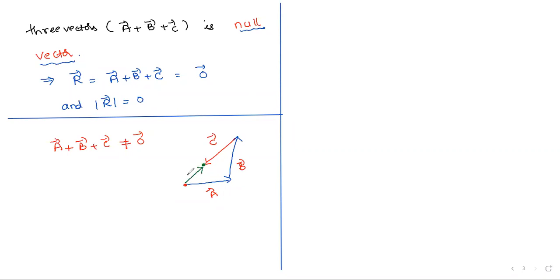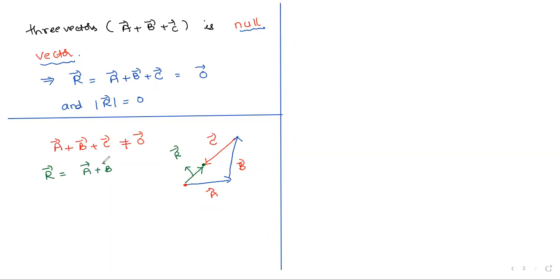This is the resultant — the green one is R-bar. Not equals to zero; R-bar equals A-bar plus B-bar plus C-bar. It is possible only when it forms a closed shape — any closed shape: with two, three, or more vectors — triangle, square, rectangle, parallelogram, pentagon, hexagon, any shape. If it is closed, the resultant is zero. And if you get zero, you can say it forms a closed shape. Otherwise use the triangle law to find the resultant step by step.